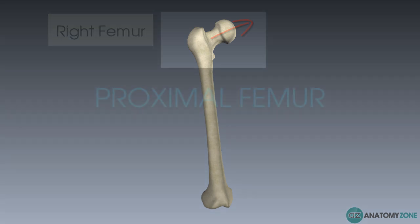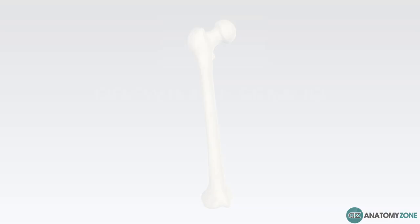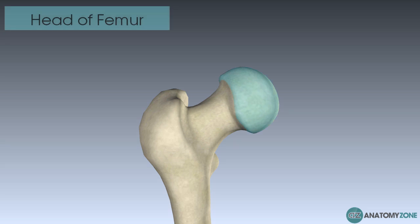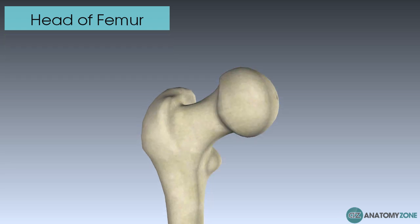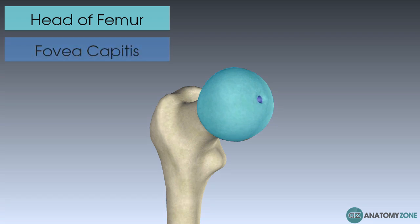Let's now look at some of the proximal features of the femur. The first thing to notice is the head of the femur, and next to it we have the neck of the femur. The only important landmark on the head of the femur is the fovea capitis — that's the central depression you can see in the centre of the femoral head.